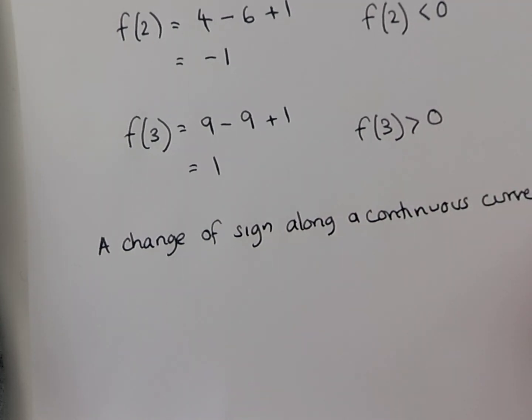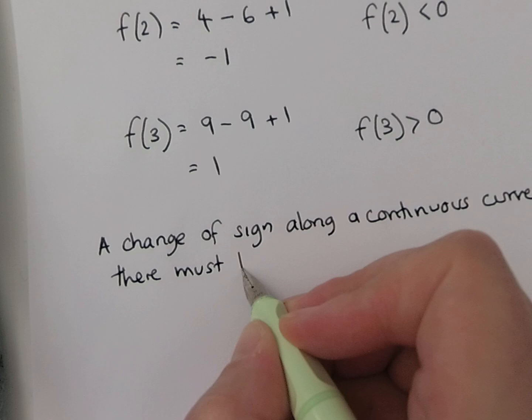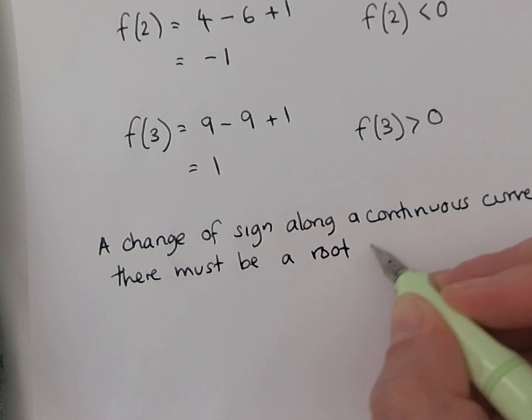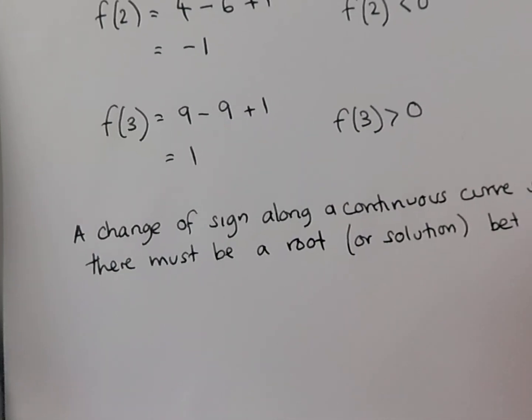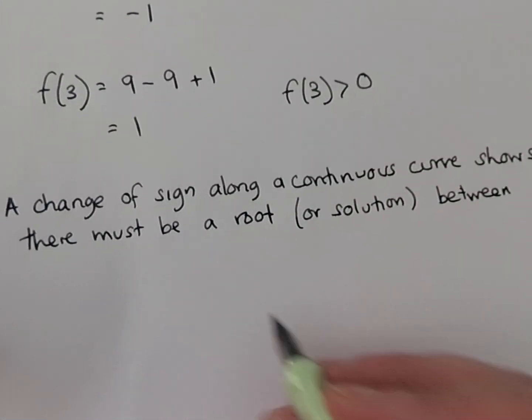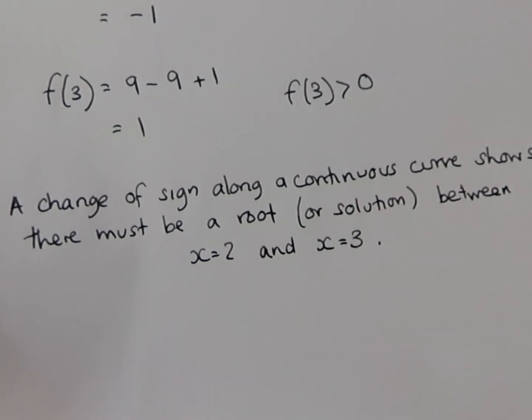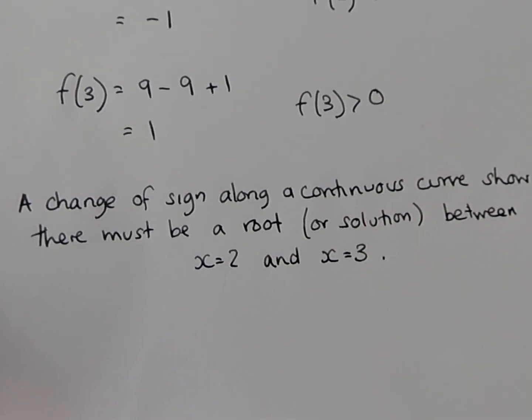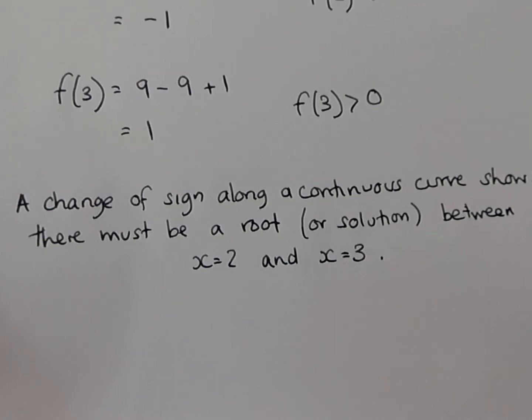Because there's been a change of sign along a continuous curve, this shows there must be a root, or you could put a solution, between x equals 2 and x equals 3. So you'll get your full marks in an exam. Hopefully that makes sense. It's really straightforward, but you've got to make sure your curve is continuous, substitute your values in, get one that's negative, one that's positive, and then write this statement. Now have a go at the questions in the task.